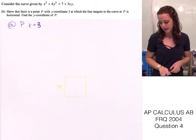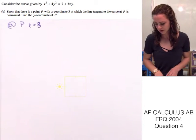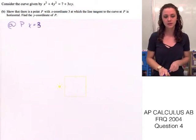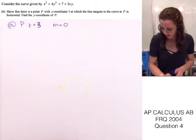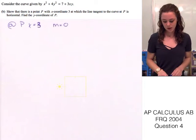At which the line tangent to the curve at P is horizontal. So, that means that the slope is 0. So, we'll put M equals 0. We need to find the y coordinate of P.